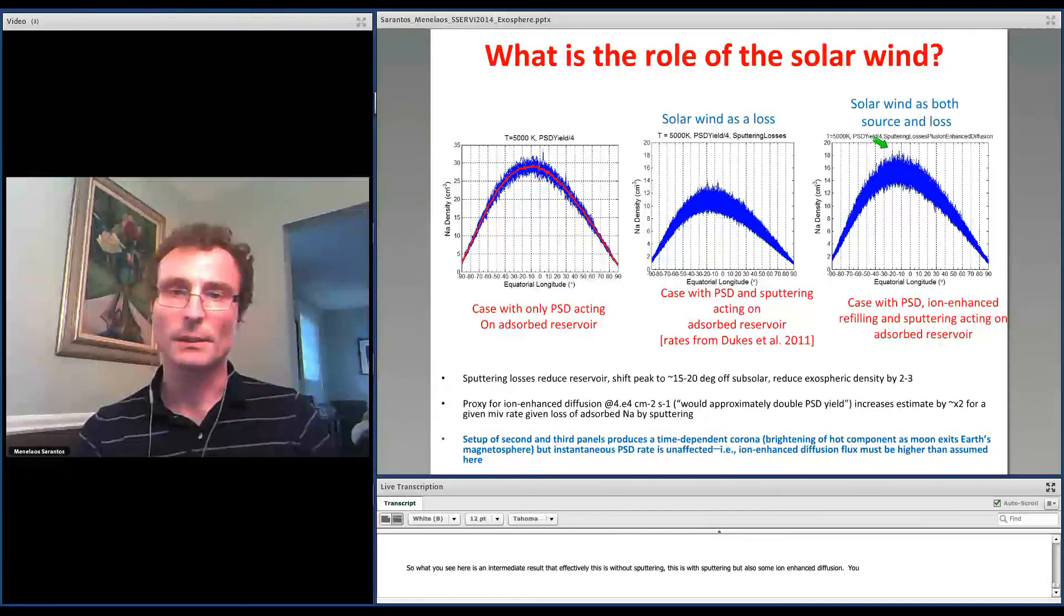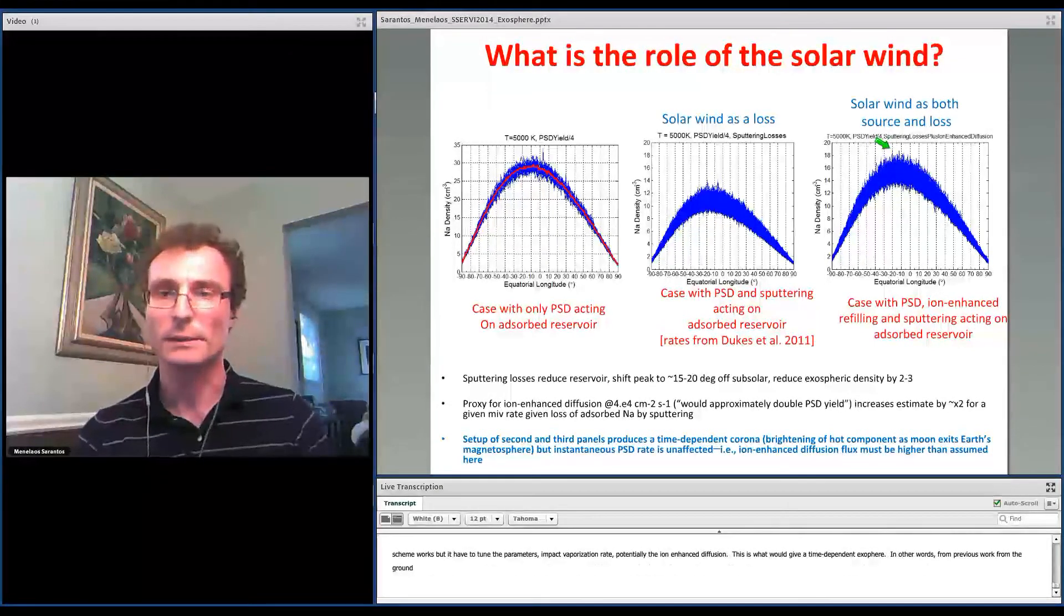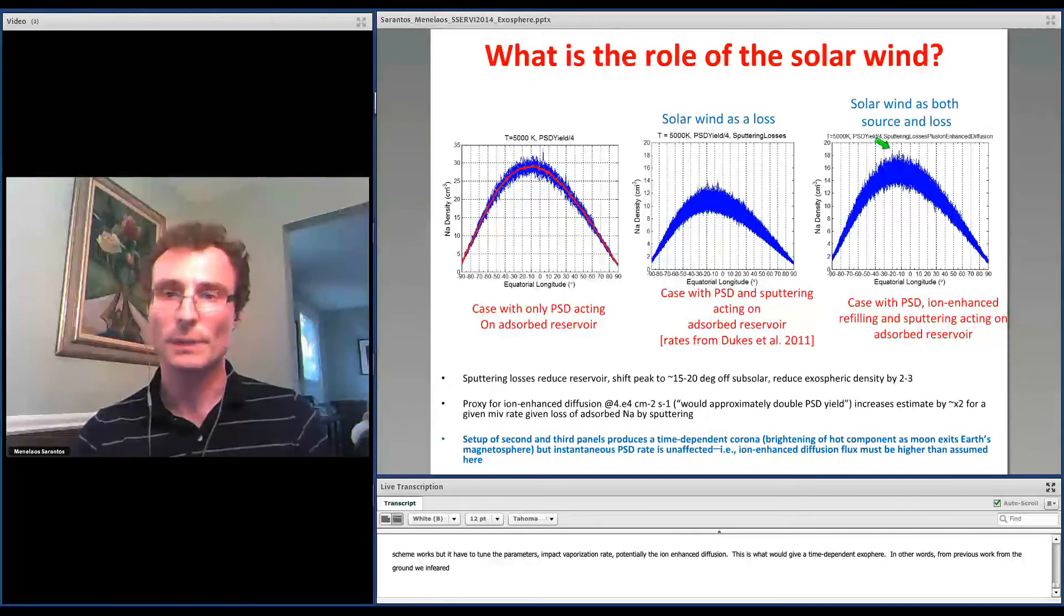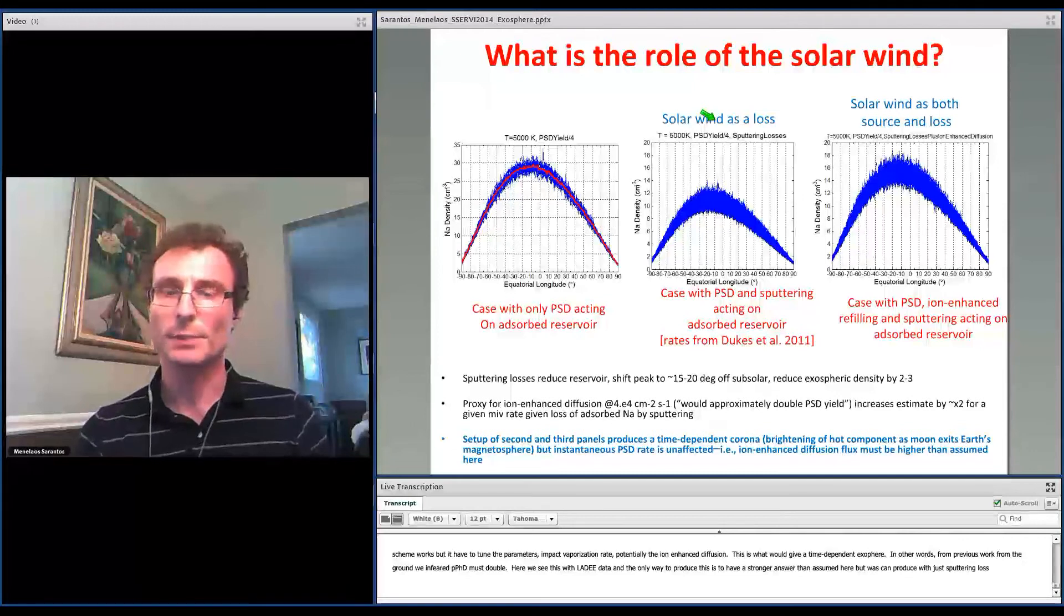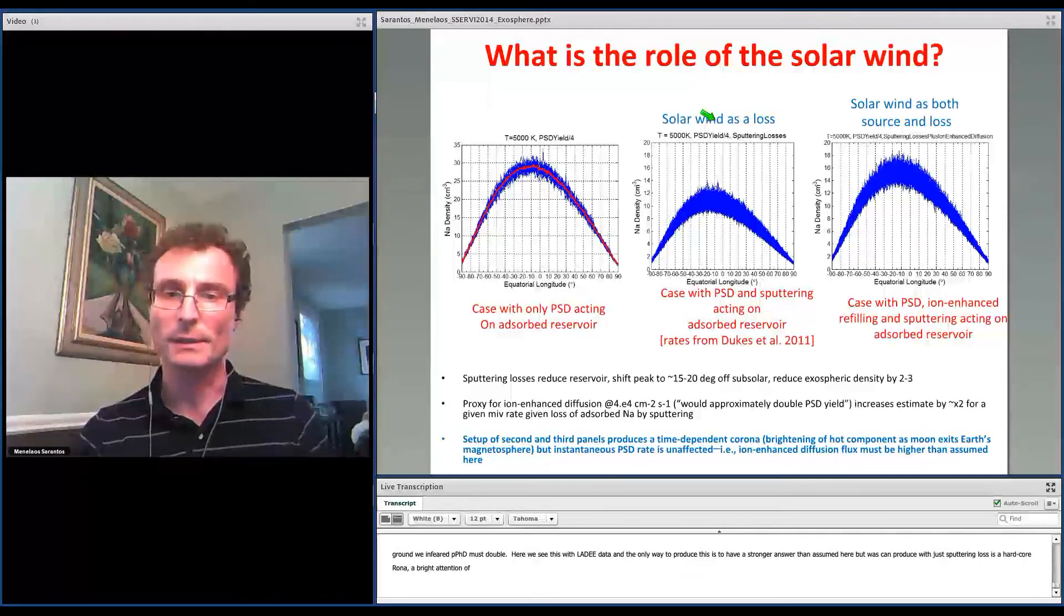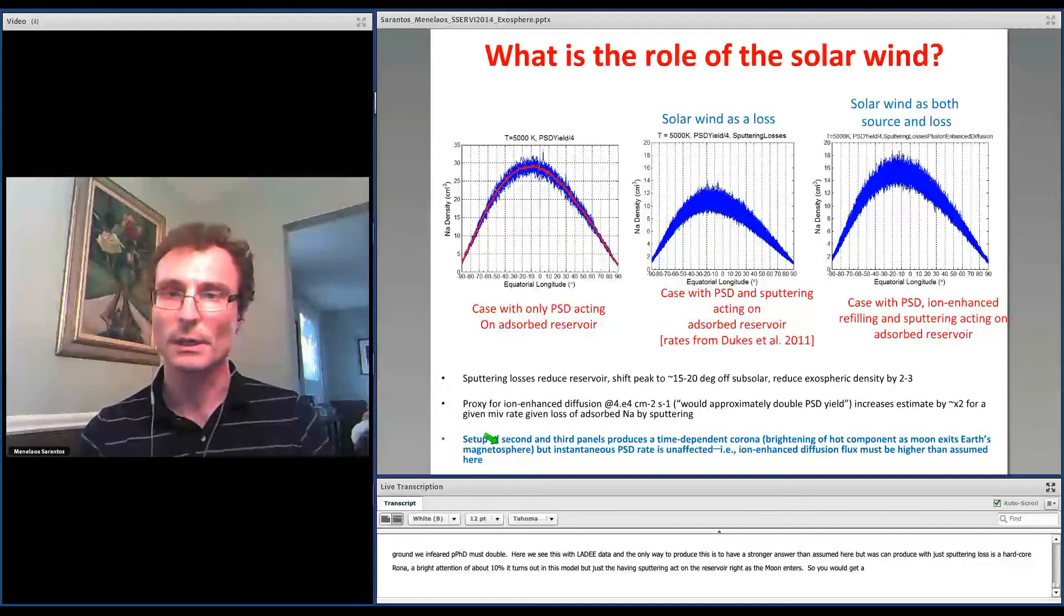So the bottom line is that the scheme works, but you have to tune the parameters—the impact vaporization rate, potentially the ion-enhanced diffusion. This term is what would give a time-dependent exosphere. In other words, from previous work from the ground, we inferred that the PSD yield must approximately double as the moon gets exposed to the solar wind. The only way to produce this is to have a stronger ion-enhanced sputtering than assumed here. But what you can produce with just the sputtering losses is a variable hot corona. You would get a brightening of about 10% in this model by just having sputtering act on the adsorbed reservoir right as the moon enters the magnetosphere again.